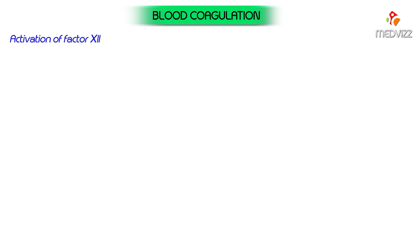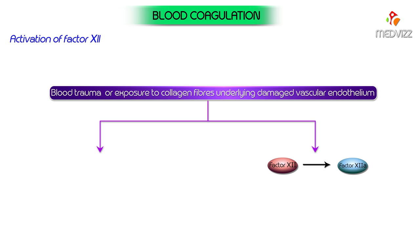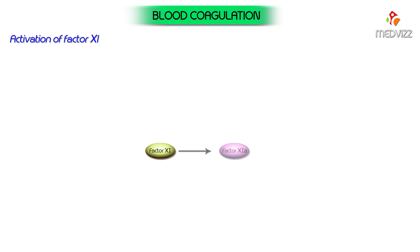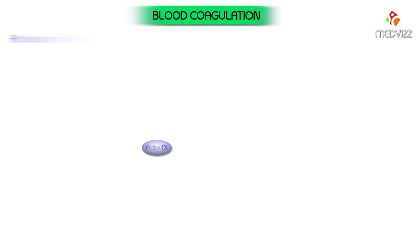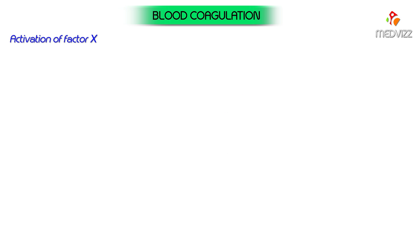Activation of factor 12: trauma to blood or exposure of collagen fibers underlying damaged vascular endothelium activates plasma factor 12 to form activated factor 12a, initiating the intrinsic pathway. Platelets are also activated. Activation of factor 11 to factor 11a is caused by activated factor 12. Activation of factor 9 to factor 9a is in turn caused by activated factor 11 in the presence of calcium.